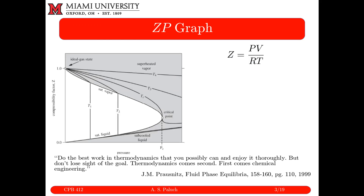Before we talk about corresponding states theory, here's a quote from one of my favorite thermodynamicists, John Prausnitz: 'Do the best work in thermodynamics that you possibly can and enjoy it thoroughly, but don't lose sight of the goal. Thermodynamics comes second. First comes chemical engineering.' As chemical engineers, we are not interested in predicting vapor pressure to 20 decimal places. Our goal is to efficiently and effectively design chemical processes. If I can predict vapor pressure to 4 decimal places, that's a fantastic accomplishment.